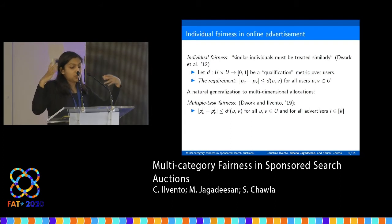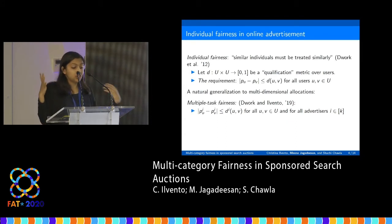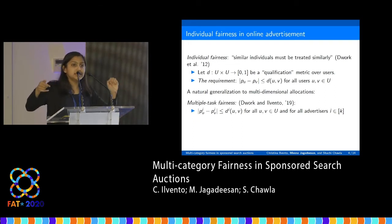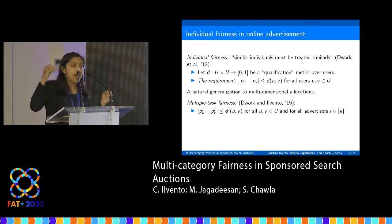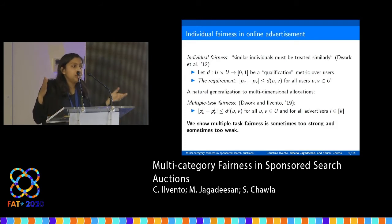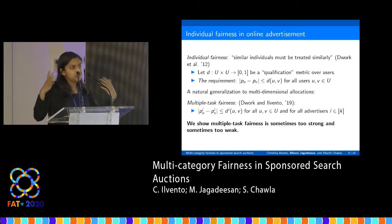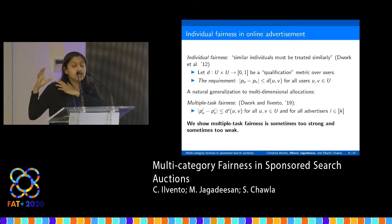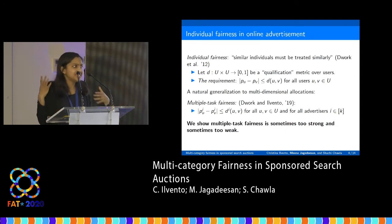That description was for one advertiser, but in our setting we have many different advertisers. Recent work proposed a notion called multiple task fairness that generalizes this to many different advertisers, enforcing individual fairness for each advertiser in each dimension. Advertisers may be from different categories, and the probability that two users see any given ad is bounded by the distance metric for the category that ad is in. We show in this work that this definition is sometimes too strong and sometimes too weak from a fairness perspective, and based on these issues we propose new fairness definitions.